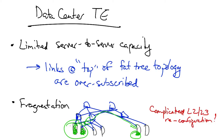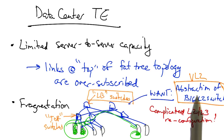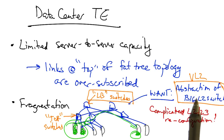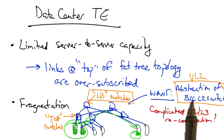What we'd like to have is just the abstraction of one large layer two switch. This is the abstraction that VL2 provides. VL2 has two main objectives. One is to achieve layer two semantics across the entire data center topology. This is done with a name-location separation and a resolution service that resembles the fabric manager, which we talked about in the last lesson and which is described in more detail in the paper.